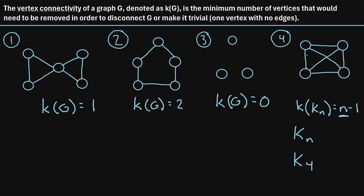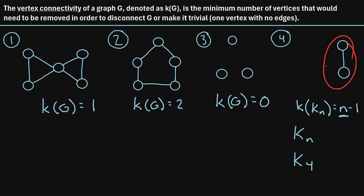For this graph with four vertices, the kappa, or vertex connectivity, is four minus one, which is three. Let's verify that. If we remove one vertex, we still have a connected graph — we can still get from any vertex to any other vertex by traveling along edges. Now if we delete a second vertex, we're still left with a connected graph — these two remaining vertices are still connected.